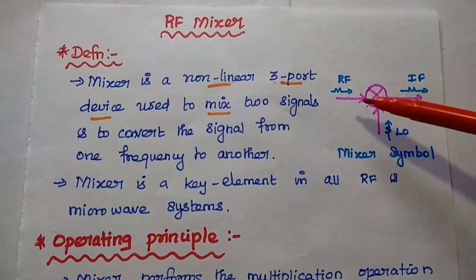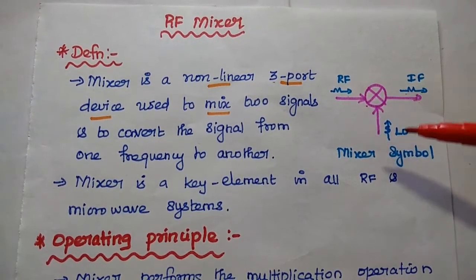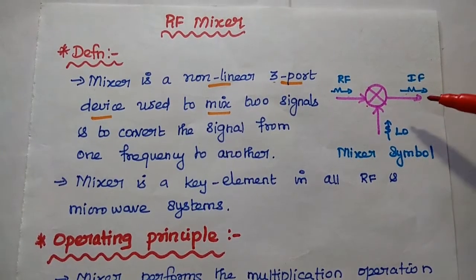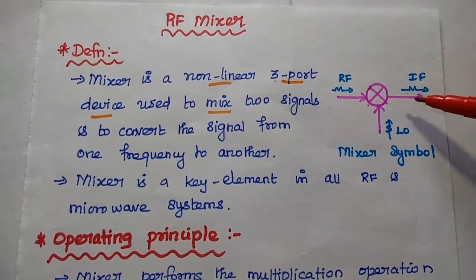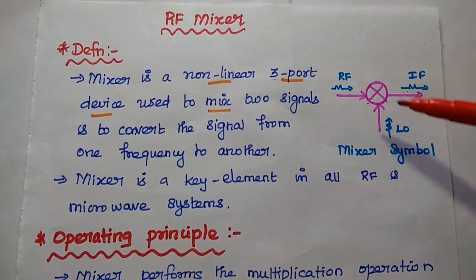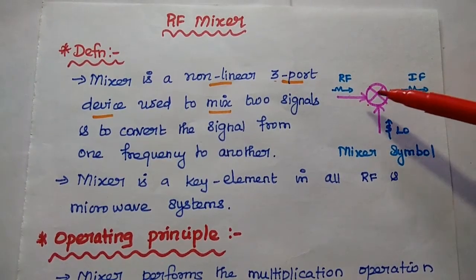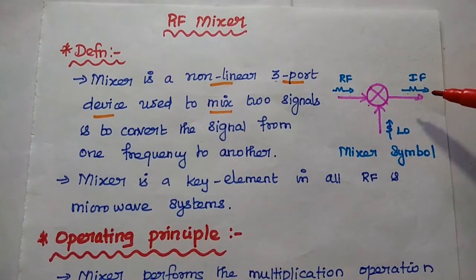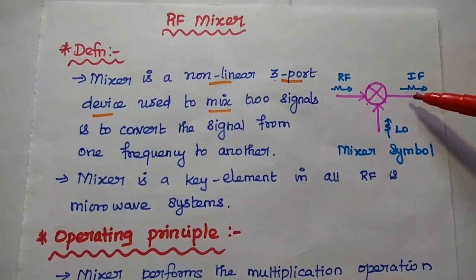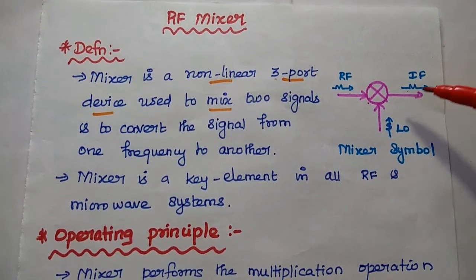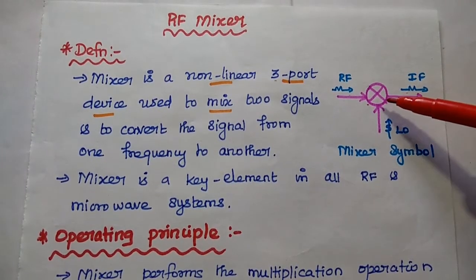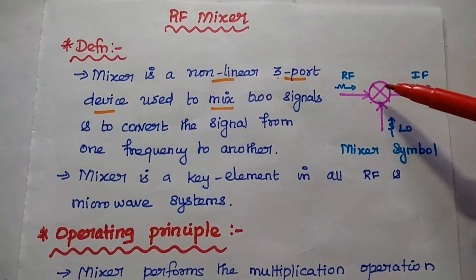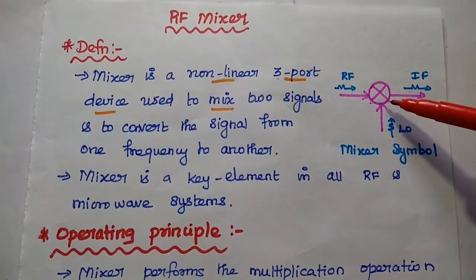The two inputs are the RF signal and the local oscillator signal. At the output side, the signal consists of the sum of the frequencies and the difference of the frequencies. Based on the applications, we can select either the sum or difference of the frequencies. This is the symbol of the mixer. The mixer performs multiplication of the two input signals, hence the symbol is a multiplier.